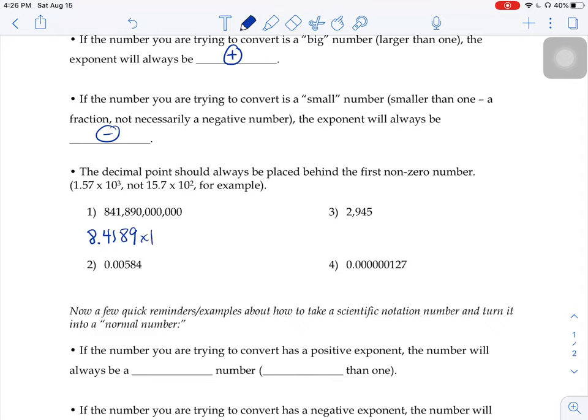And now I have to figure out what my exponent's going to be. Well, in our heads, we have an imaginary decimal point back here at the end of that very large number. We don't write it typically, but it's hiding there in our heads.